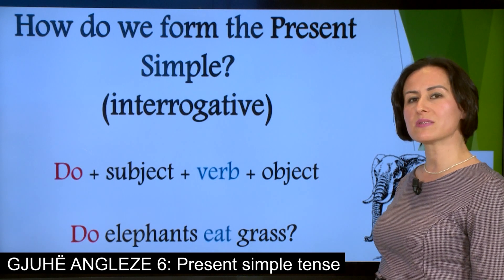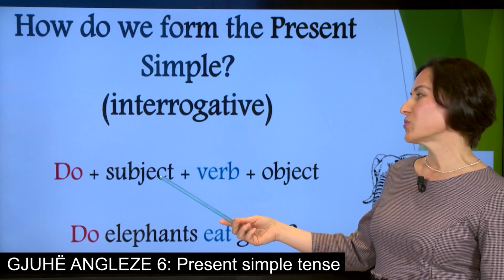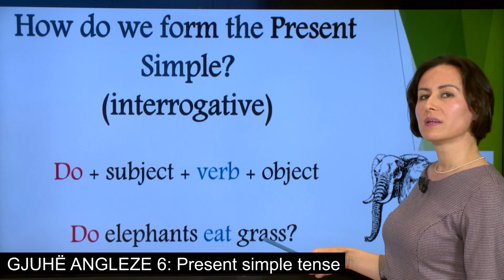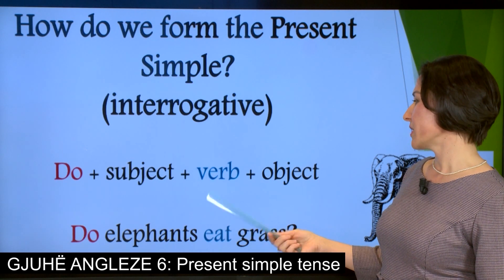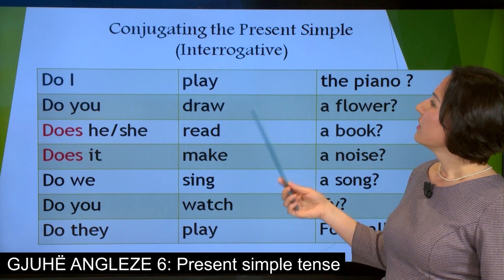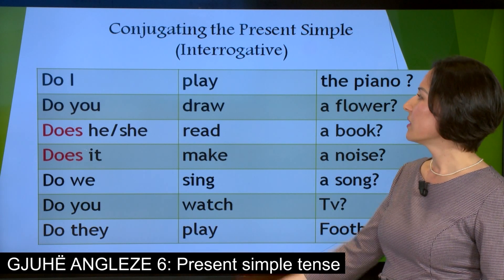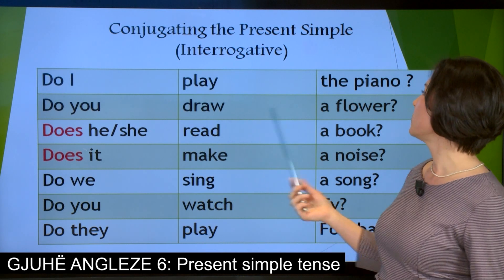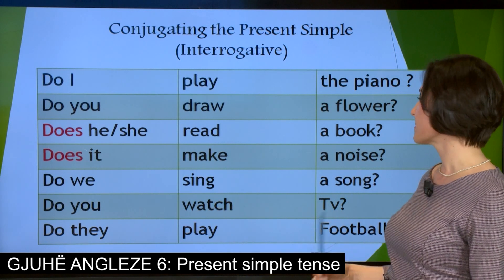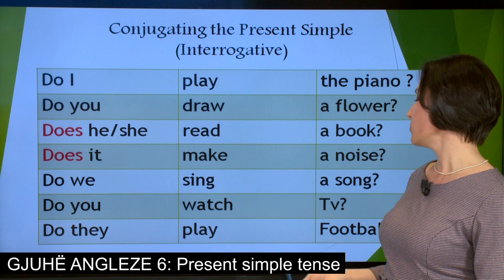How do we form the present simple interrogative? It is formed by using do, followed by the subject, the main verb, and the object. For example: Do elephants eat grass? Let us conjugate: Do I play the piano? Do you draw a flower? Does he or she read a book? Does it make noise? Do we sing a song? Do you watch TV? Do they play football?